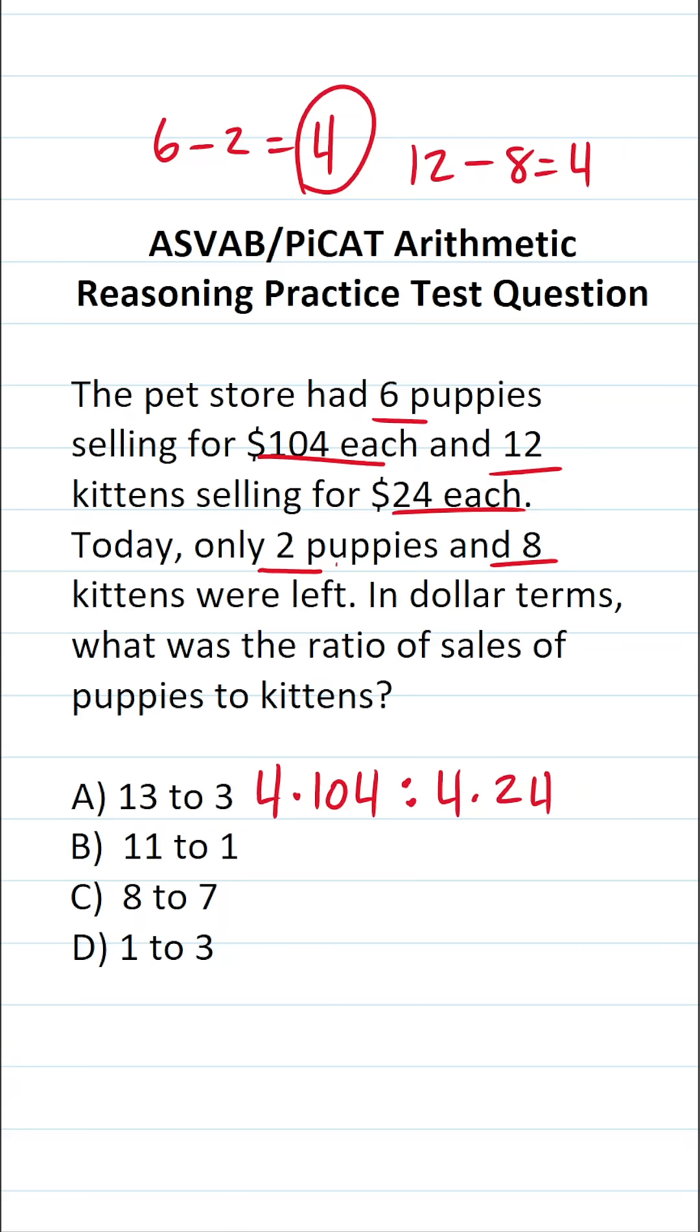So what we have to do now is simplify this ratio. And the first thing I want to point out is that both of these have a common factor of four that we can get rid of. So we can cross these out. This makes the ratio much easier to work with. It's 104 to 24.